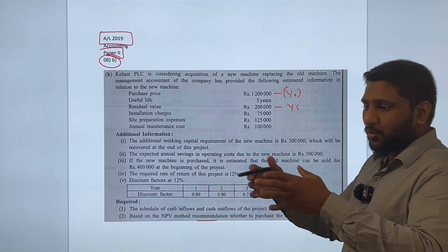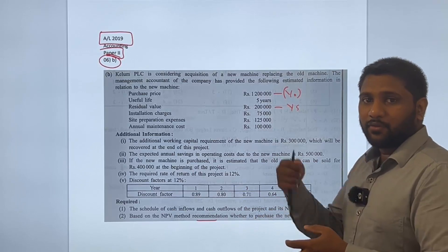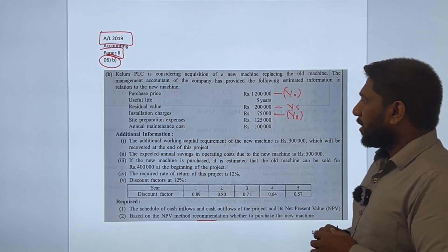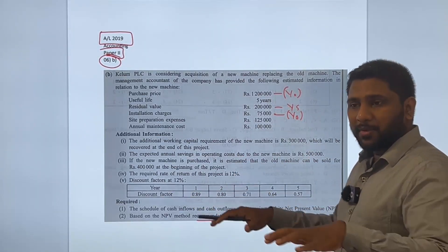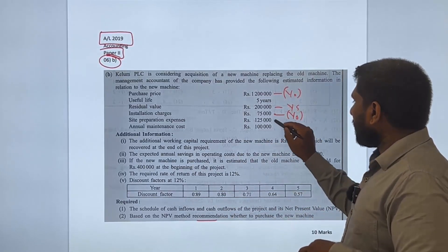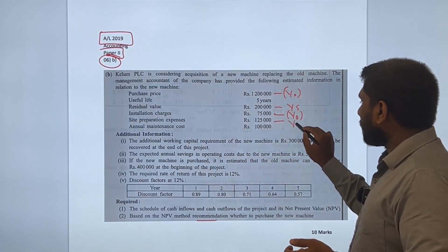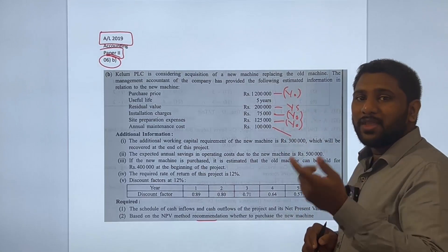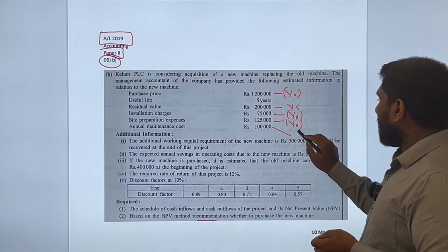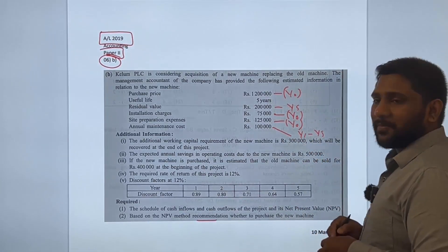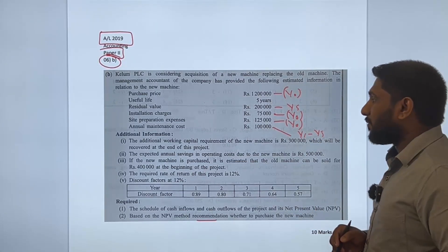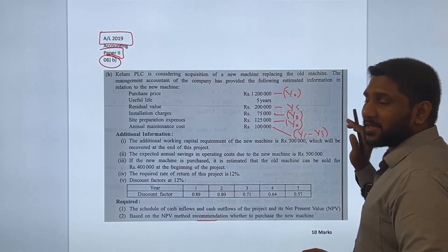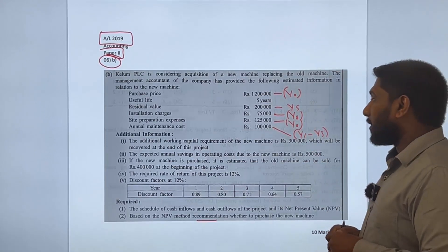Installation charges are a cash outflow for year 0 — when you bring the asset, you have to install it and pay for that. Site preparation is also a cash outflow for year 0, as you need to prepare the site before installing the asset. Annual maintenance cost is 100,000 every year — a cash outflow for years 1 to 5.